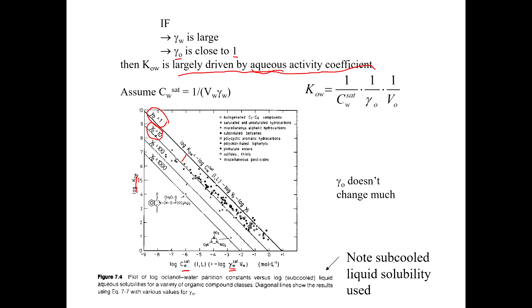And it's because of these types of relationships that we can use KOW to predict the solubility in water. And note also that this is subcooled liquid solubility. That's always important.